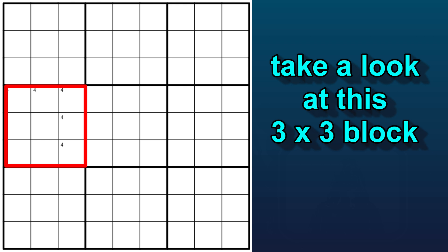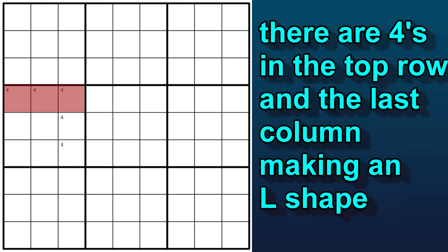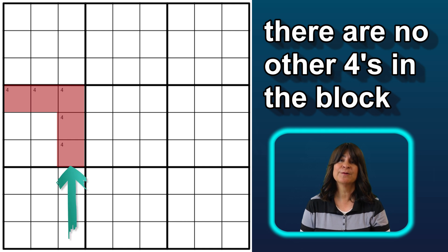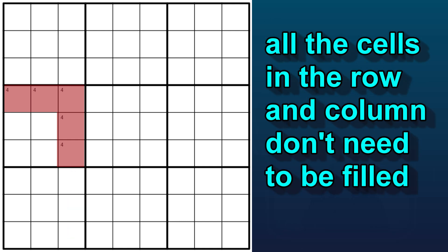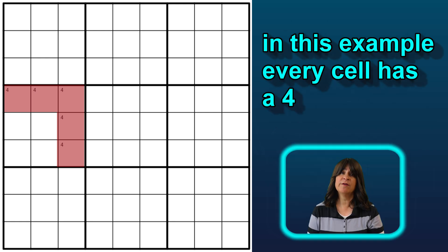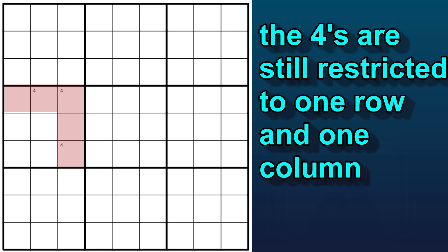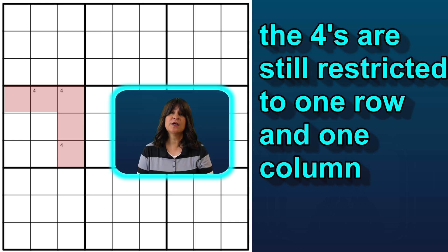Take a look at this 3x3 block. There are 4s in the top row and last row, making a sort of L shape. But you can see there are no other 4s in the block. All the possible 4s are restricted to one row and one column. All the cells in the row or column don't have to be filled with 4s — that's not necessary. The pattern could look like this as well, where only some of the cells have 4s, but still all the 4s are restricted to one row and one column, and the rest of the block is empty of 4s.